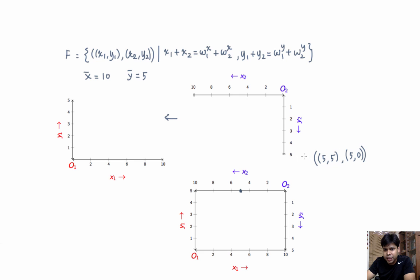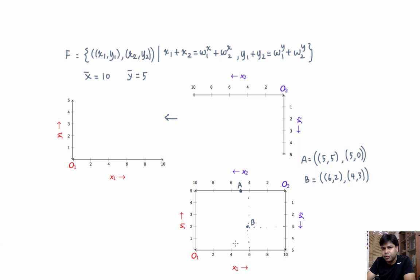So let's call this allocation A. Now there are other allocations — for example, let's plot allocation B, which is maybe individual 1 consuming 6 units of x and 2 units of y, and individual 2 consuming the remainder which is 4 units of x and 3 units of y. This is our allocation B. So any feasible allocation can be represented in this Edgeworth box.